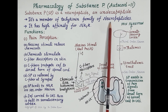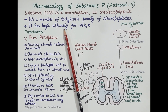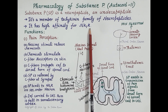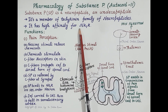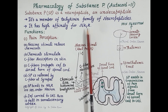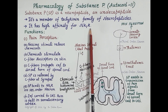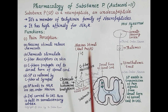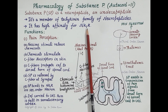Substance P has high affinity for neurokinin-1 receptors, abbreviated as NK1R. These neurokinin-1 receptors are found on the spinal cord, the endothelium of blood vessels, white blood cells, neurons, and many other places.